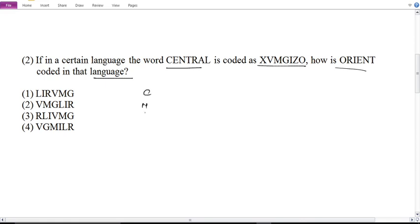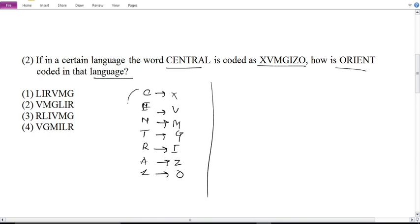So now let's see, C, E, N, T, R, A, L. Now let's see, X, V, M, G, I, Z, O. So, now let's see, this is central, this is called alpha pairs.